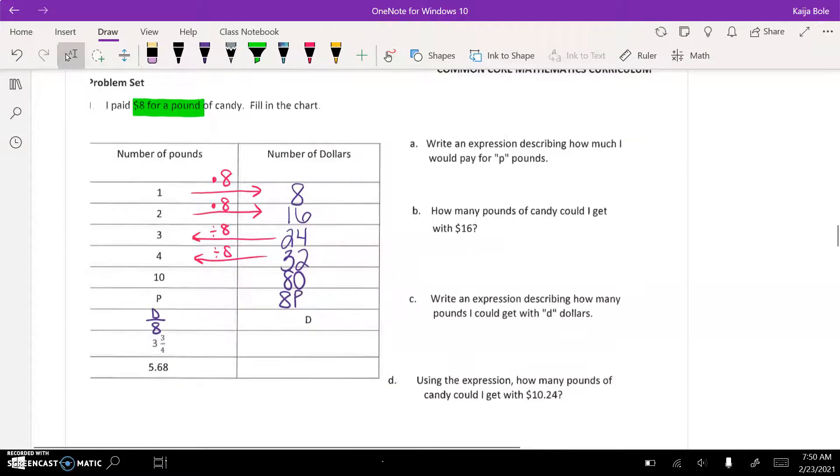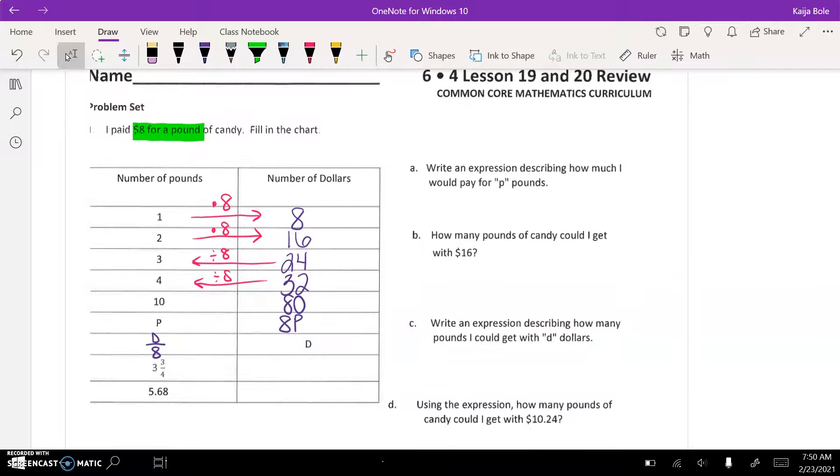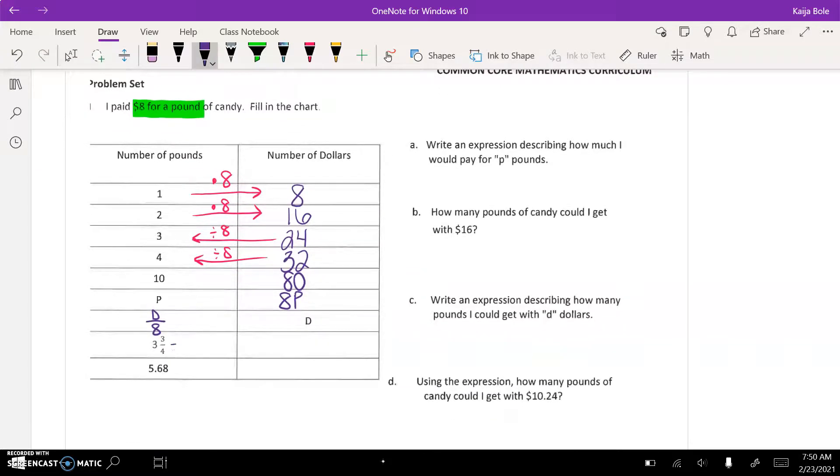Now for these last two, you should be using a calculator. Remember, three and three fourths is the same thing as three point seven five. You're going to use a calculator for that and then answer the question. So write an expression describing how much I would pay for p pounds, well that's what we did here, so this would just be 8p.